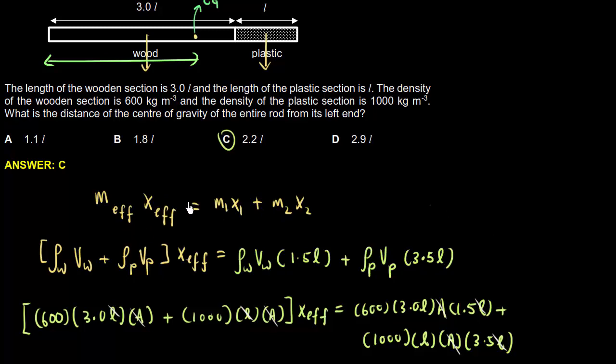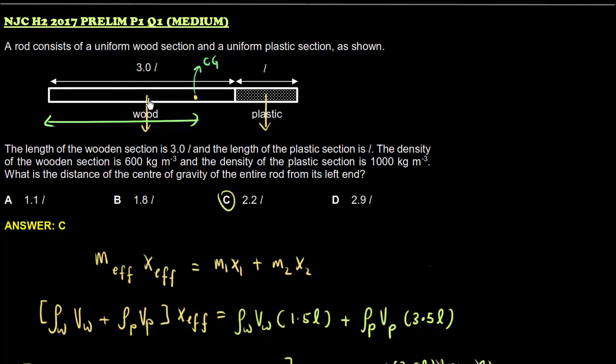What is M-effective X-effective? It means the total mass, and effective means this X-effective means this length here. This is what I'm saying. Let's take this reference as 0, 0, this 0, 0 coordinate.